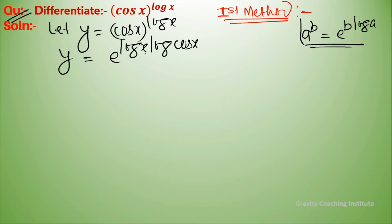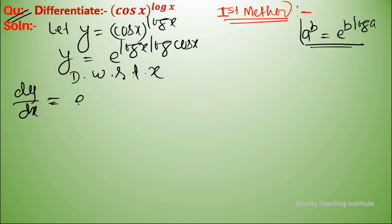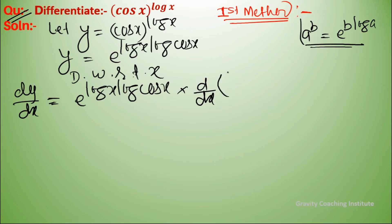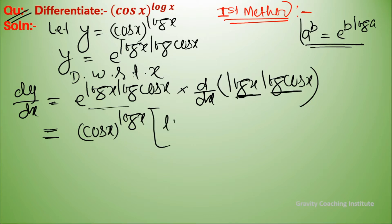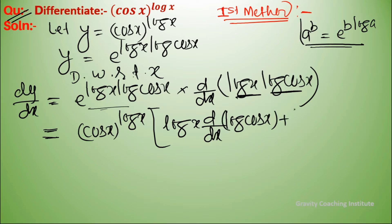Now we differentiate with respect to x. So dy upon dx equals e to the power log x times log cos x, and since this equals cos x to the power log x, we apply the product rule: log x into differentiation of log cos x, plus log cos x into differentiation of log x.